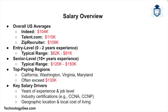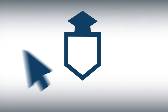The average annual salary for a network engineer in the U.S. ranges from approximately $104,000 to $115,000 per year depending on the data source. Indeed reports an average of $104,000, Talent.com cites $115,000, and ZipRecruiter estimates $109,000 per year. Entry-level network engineers typically earn between $62,000 and $91,000 a year, whereas senior-level professionals can command salaries ranging from $120,000 to over $150,000, influenced by experience, certifications, and location.